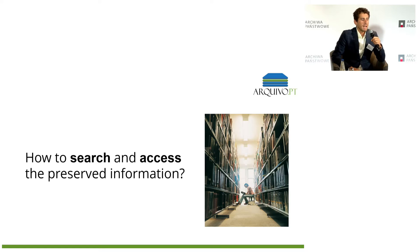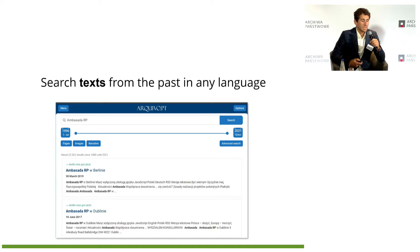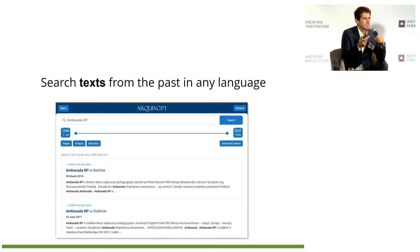How can anyone search and access the preserved information? You can search pages from the past in any language. It looks like a search engine, but the interesting part are the calendars — this is where everything changes. I usually say that time changes everything. When we restrict the time span of your search, you get different results. This is how a web archive search engine is different from a live web search engine.